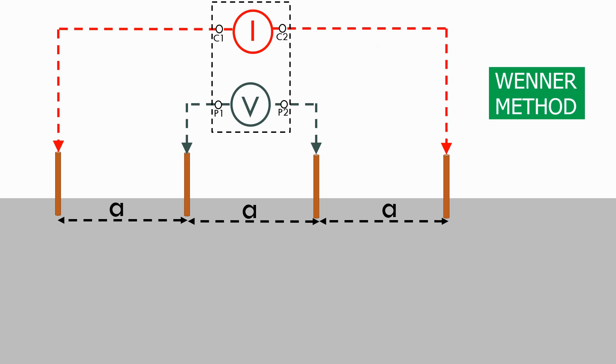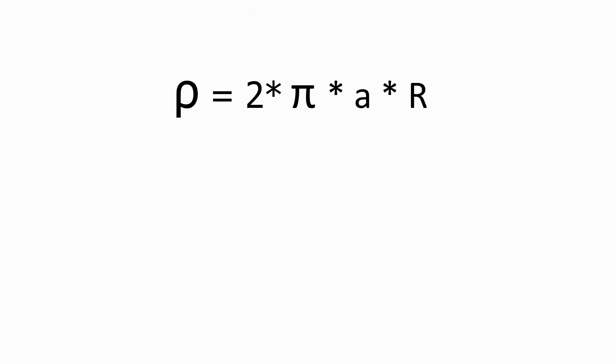We can then convert this resistance value R into a soil resistivity measurement using the following formula. The soil resistivity, ρ, equals 2 times π times A times R.